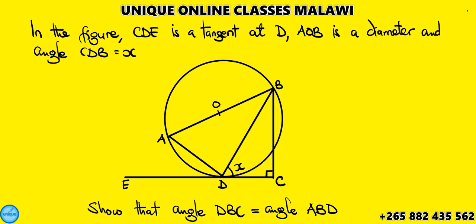Let us see the solution of this question. It was question number 5a from the 2024 manual. The question reads: in the figure, CDE is a tangent at point D, and AOB is the diameter.